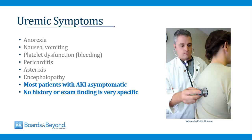On this slide, I've listed some of the important symptoms of uremia. These include anorexia — patients who are uremic often do not want to eat or drink. They complain of nausea and vomiting. The platelets become dysfunctional when the kidneys fail, and so these patients are prone to bleeding. Uremic pericarditis can occur in some patients. Asterixis is a flapping of the hands when you ask the patient to stretch their arms out straight, and this can be seen in uremia.